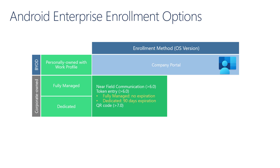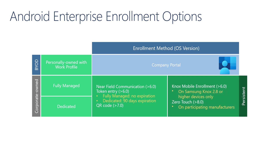For QR code enrollment, as soon as the device is reset, the first screen you reach allows you to tap the screen six times. For devices with Android version 7 and 8, the QR code app will be downloaded, but for devices with OS version 9.0 and above, the QR code is automatically embedded in the operating system. You can also progress through device configuration and when asked for a Google account, enter AFW#SETUP, which will trigger the flow where the QR code app is downloaded, similar to the flow for Android 7.0 devices.